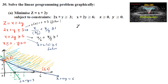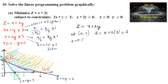Now we evaluate the objective function z = x + 2y at the corner points. At (0, 3): z = 0 + 2(3) = 6. At (6, 0): z = 6 + 2(0) = 6. Both points give the same value of z = 6.